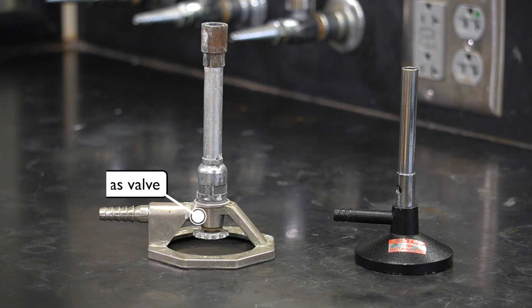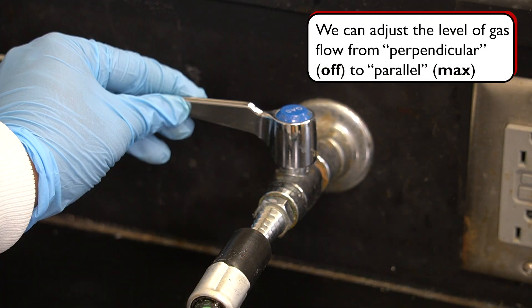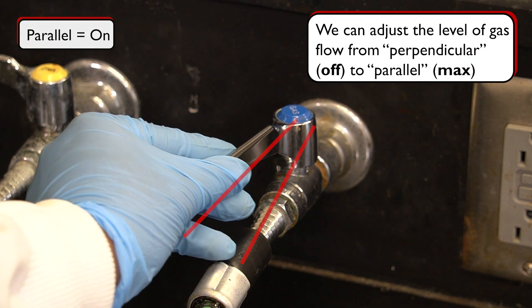Some burners also have a gas valve, which allows us to adjust the flow of natural gas and the size of the flame. That said, most burners in our lab do not have this gas valve. However, we can still adjust the flame size by turning the gas outlet nozzle on our workbench.